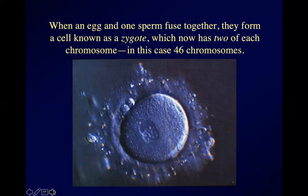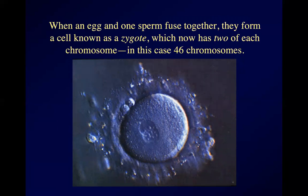That is a fertilized human egg — a zygote. The outer stuff is a barrier to keep more than one sperm from fertilizing the egg at the same time. The egg cell itself is mostly round, and in the center you can see two nuclei that are starting to fuse. That new nucleus forming as the egg and sperm nuclei fuse will have two of each chromosome — 46 chromosomes.